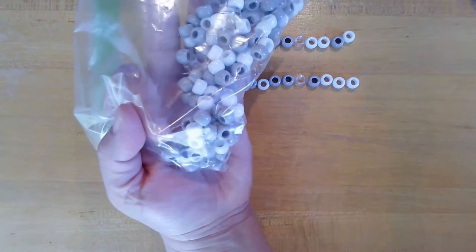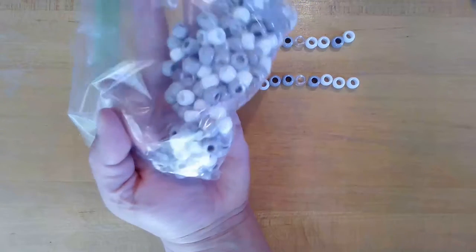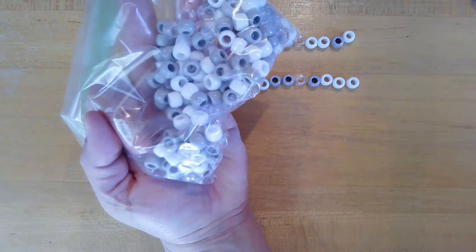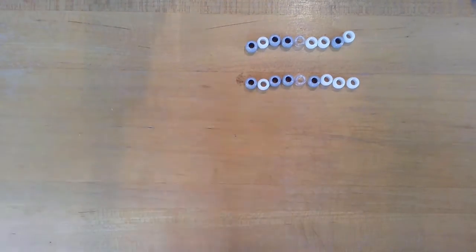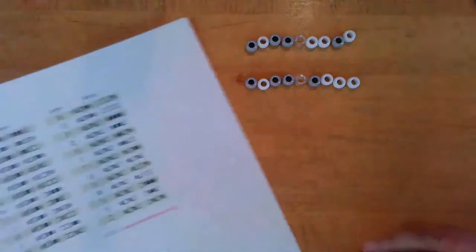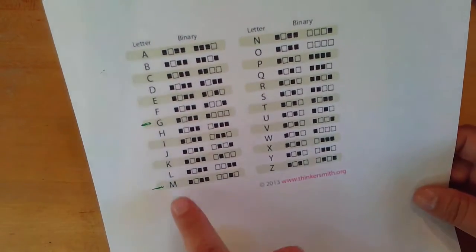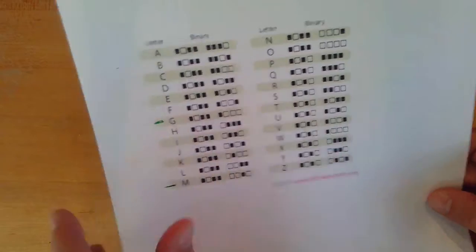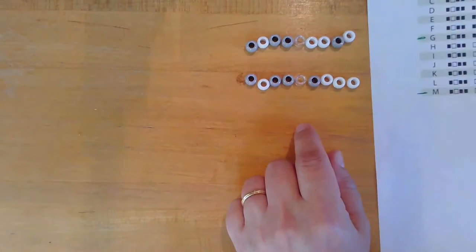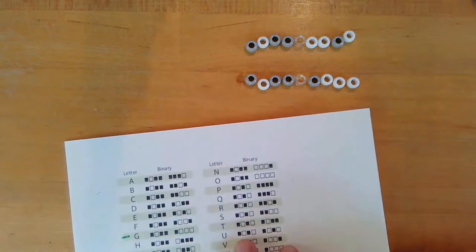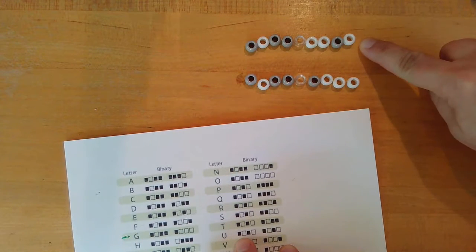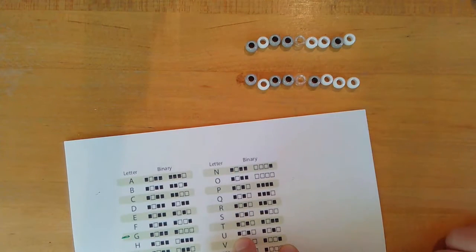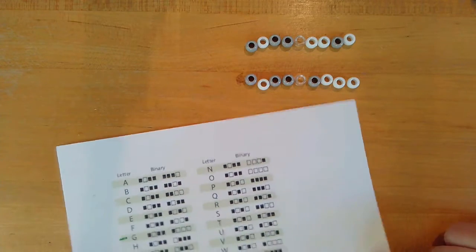I picked out which beads were going to represent the black and the white boxes on the key, and which beads were going to be the space. So I've got my letters M and G here for my name, and I picked out the beads that would represent M and G. I used the clear for the space in between the two chunks of the binary code.